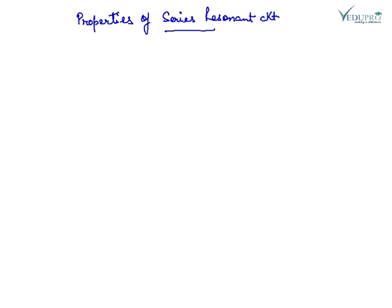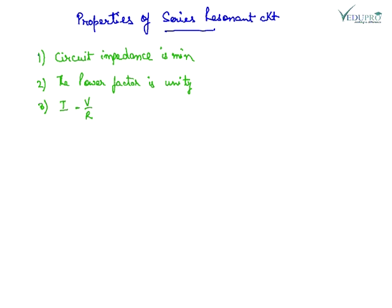Properties of series resonant circuit: The circuit impedance is minimum and is equal to R. The power factor is unity. Current is V upon R and the current is maximum. Power dissipated is V squared upon R which is maximum.